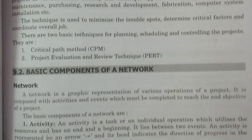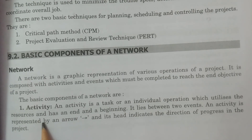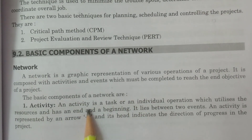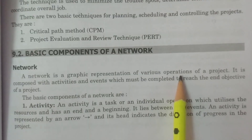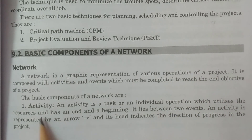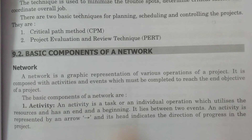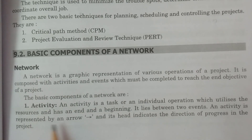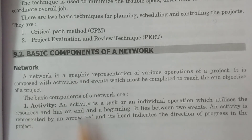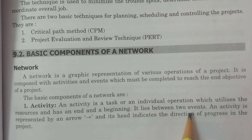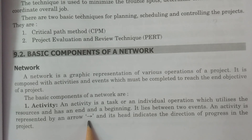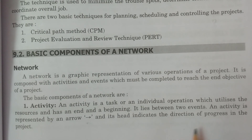What is an activity? An activity is a task or an individual operation. Every operation of a project is an activity. Every activity consumes some resources and has a beginning and an end — it lies between two events. An activity is represented by an arrow mark.